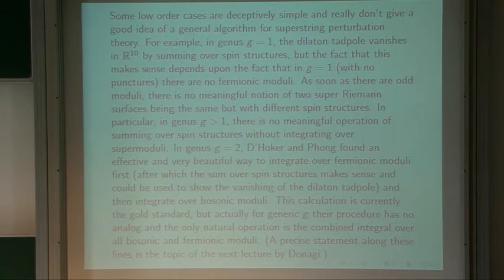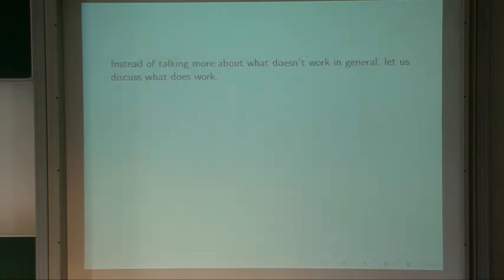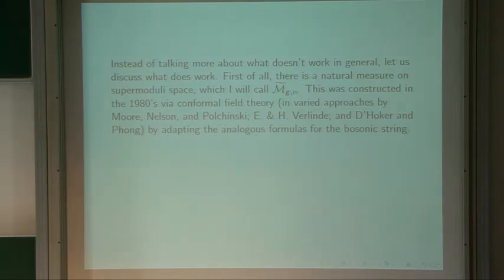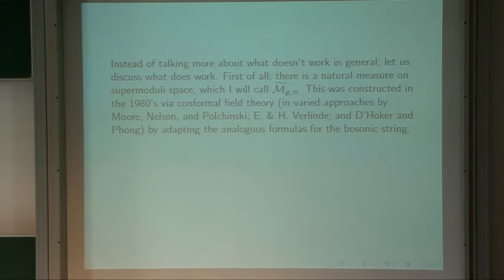A precise statement along these lines will be the topic of the next lecture. Let me move on to discuss some things that do work. One is that there is a natural measure on supermoduli space. I'll call supermoduli space M-tilde_{g,n} where g is the genus and n is the number of punctures — simplifying notation by not distinguishing Neveu-Schwarz and Ramond punctures. The tilde means we're discussing the moduli space of super-Riemann surfaces; the same notation without the tilde will be the classical moduli space of bosonic Riemann surfaces.